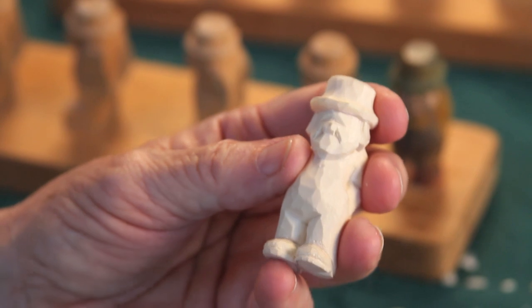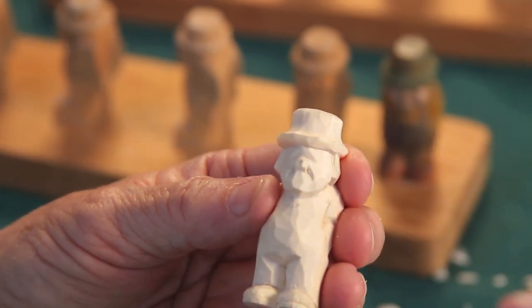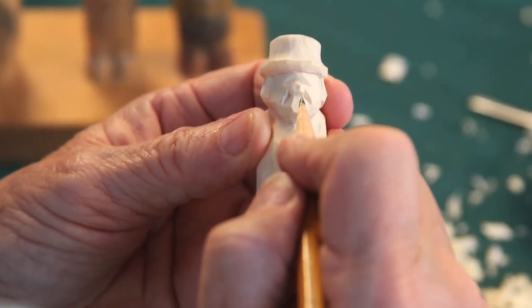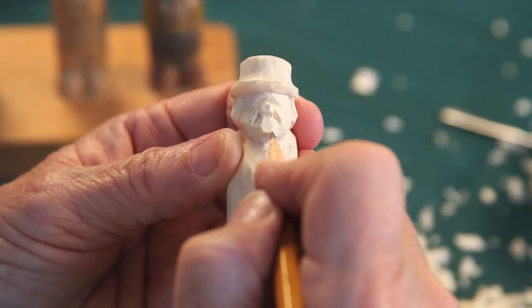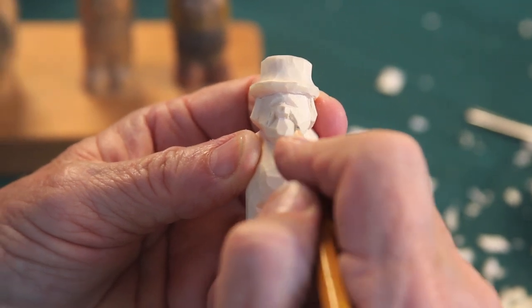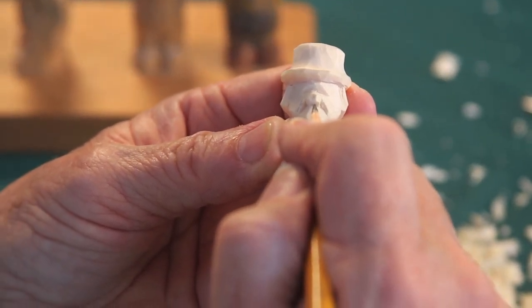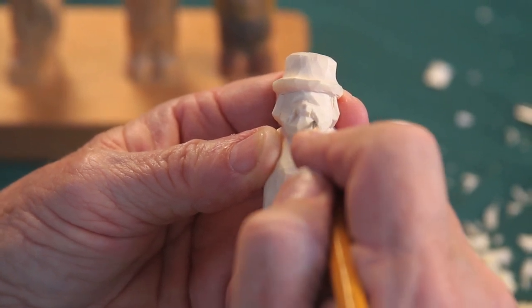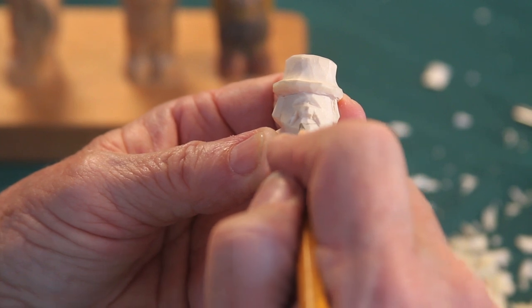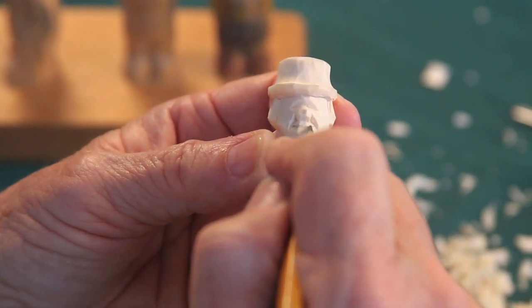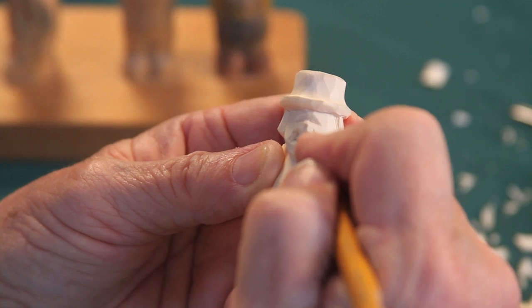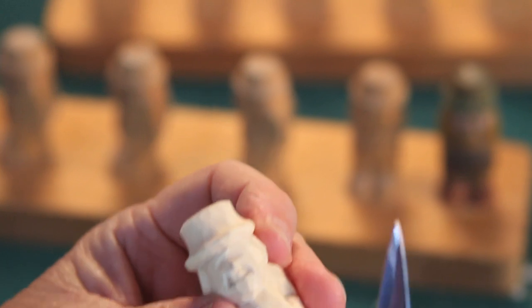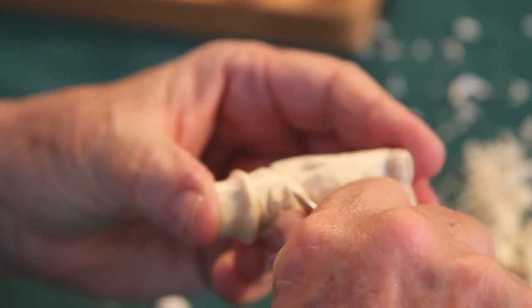Next part, let's take our pointed pencil, nice sharp point, and not quite halfway between the bottom of the nose and the chin, we're going to make a little smile line. We want it to be closer to the bottom of the nose than the chin. If you make it too far down here, he looks like a Neanderthal. So, we're just going to go right across here and not going to curve that up too much. Now, we're going to take our knife tip and cut that line out.